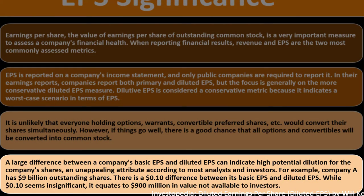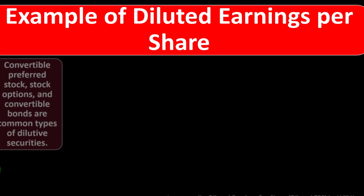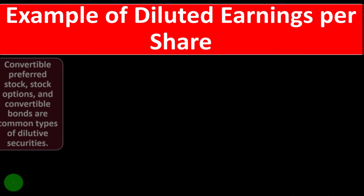A large difference between a company's basic EPS and diluted EPS can indicate high potential dilution for the company's shares — an unappealing attribute according to most analysts and investors. For example, Company A has 10 billion dollars in outstanding shares. A 10-cent difference between basic and diluted EPS seems insignificant, but it equates to 900 million dollars in value not available to investors.